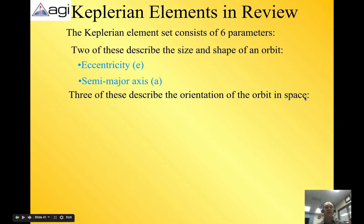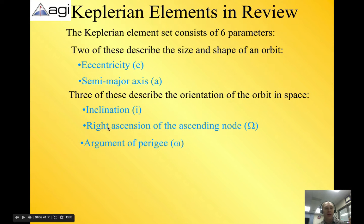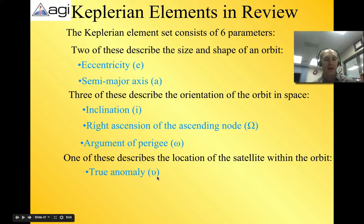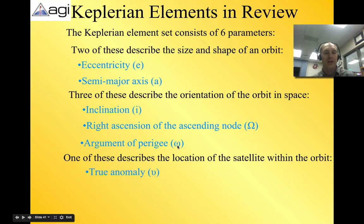There are three of these describe the orientation of orbit in space. You have inclination, right ascension of the ascending node, and argument of perigee. And one of these parameters of the Keplerian element set describes the location within the orbit at any given moment, and that is true anomaly. And that is identified with this little V symbol here. And argument of perigee is this omega W. These are some Greek letters. We have the omega symbol here.